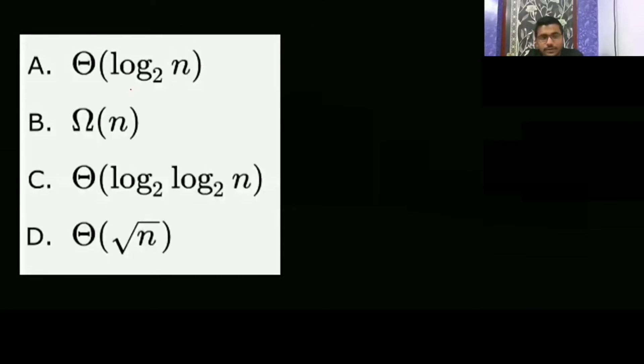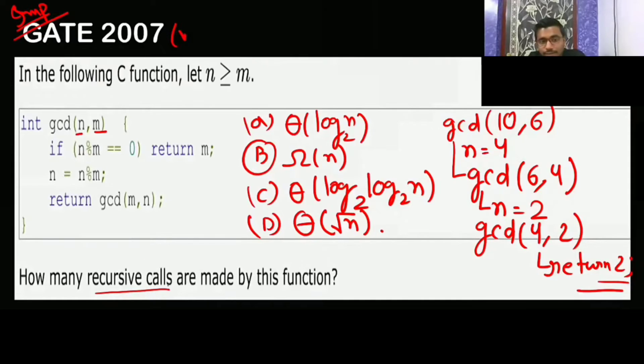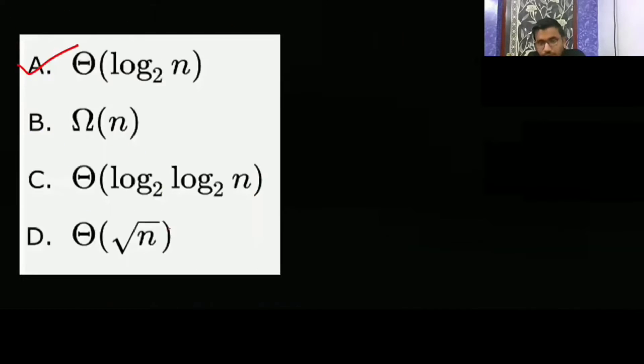Option A is the correct answer here. Now let me explain how. In the worst case, what can happen — they are asking how many recursive calls can be made by this function. In the worst case, I am calling this GCD where N should be greater. I am calling it on N=144 and M=89.